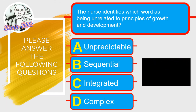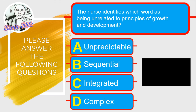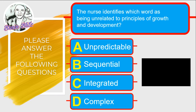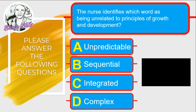Question three: The nurse identifies which word as being unrelated to principles of growth and development — A: unpredictable, B: sequential, C: integrated, or D: complex. Since we are looking for the word unrelated to the principles, and growth and development follows predictable patterns, the correct answer is letter A, unpredictable.